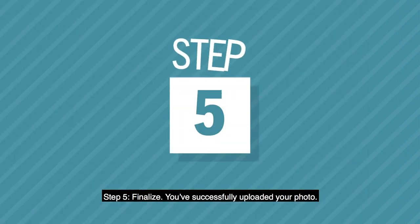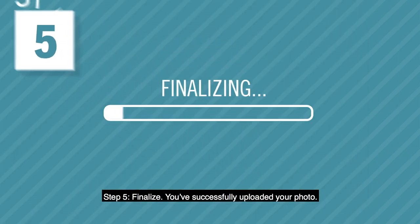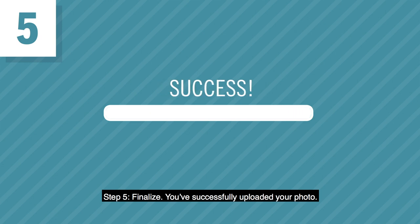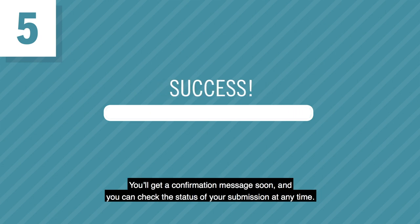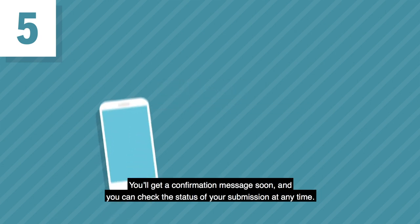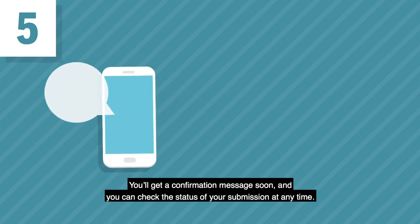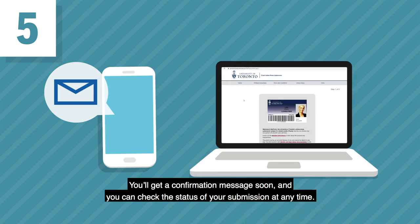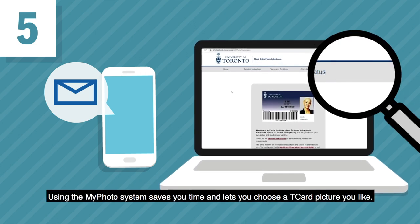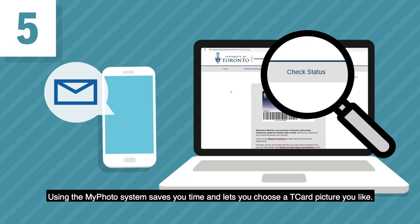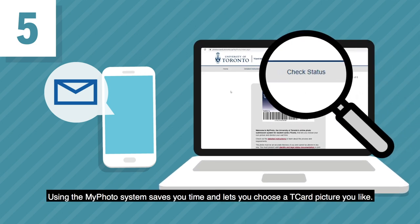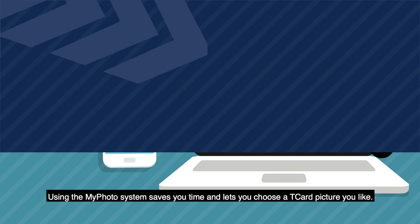Step 5: Finalize. You've successfully uploaded your photo. You'll get a confirmation message soon, and you can check the status of your submission at any time. Using the MyPhoto system saves you time and lets you choose a T-Card picture you like.